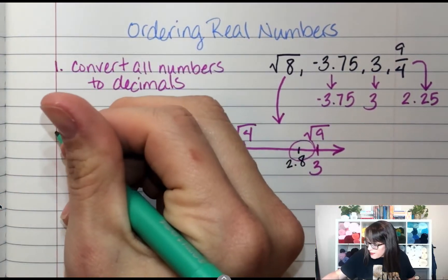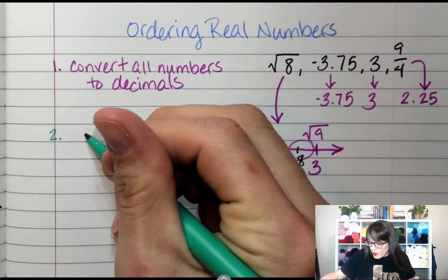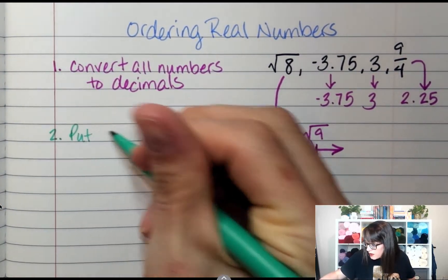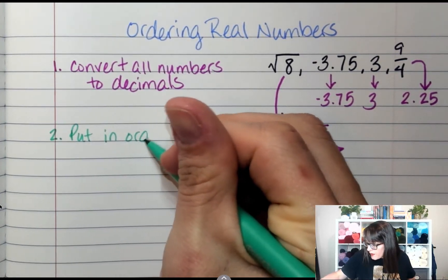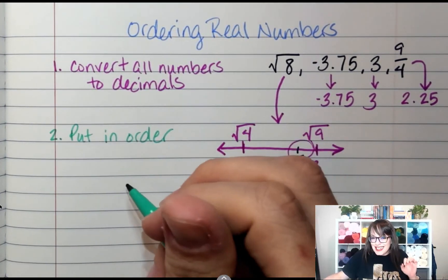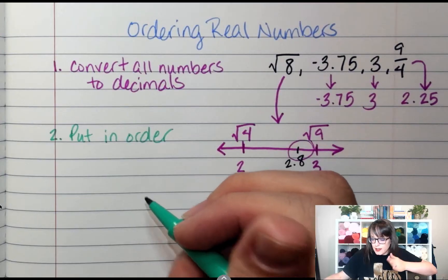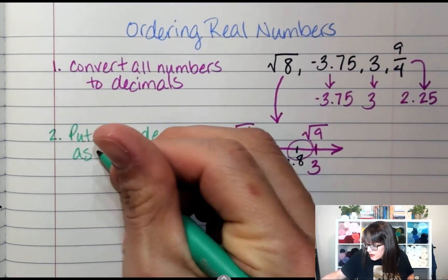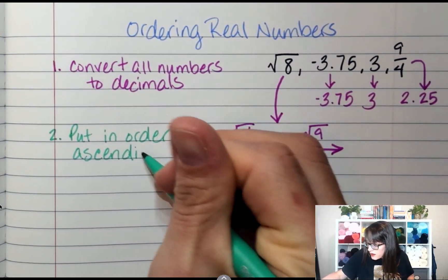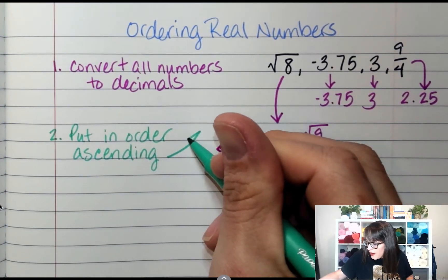So my next step, after they're all in the same format, I'm going to put in order. So step two: I'm going to put in order. Ascending means from littlest to biggest. Ascending is going up.